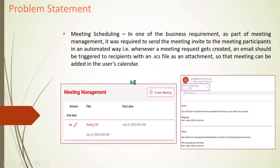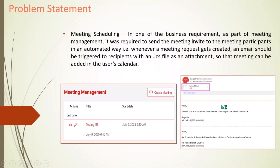I'll talk about the scenario that pulled me to create this demo, which creates an ICS file — the calendar event file — based on some automation using Power Automate. The customer had meeting management leveraging SharePoint event management, and the requirement was that whenever a meeting gets created in a SharePoint list, the recipients should get the calendar event directly in their inbox so they can add it to their calendar.